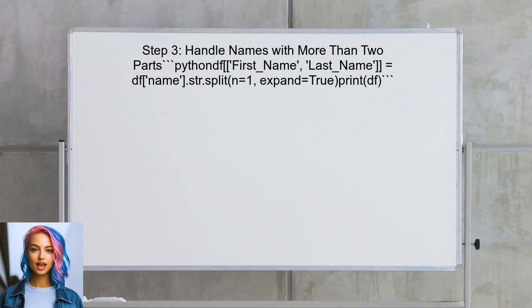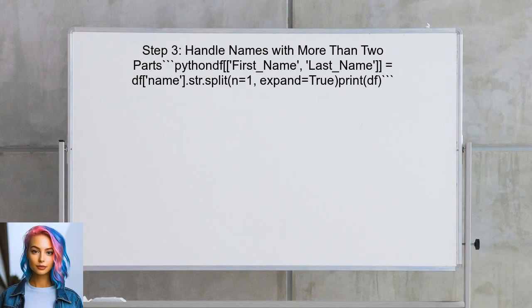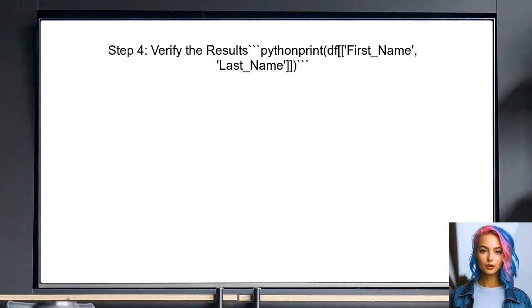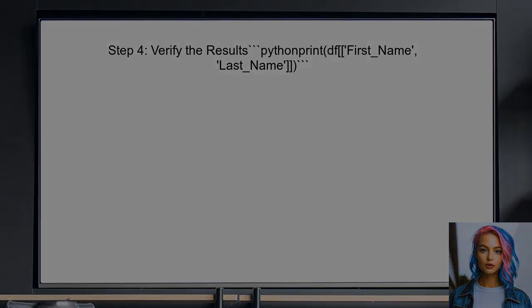If the user encounters an error stating that the columns must be the same length as the key, it may be due to some names having more than two parts. To handle this, they can use the n parameter in the str.split method. Finally, the user should verify the results by printing the updated data frame, which will show the new columns with the split names.